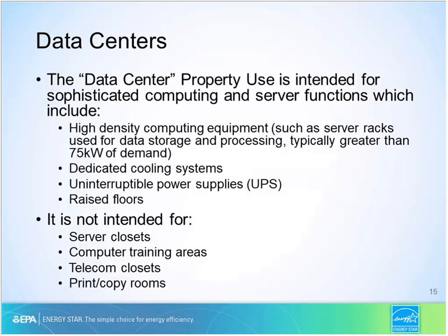We see a lot of data centers benchmarked within offices, so we want to cover this specific property type. For true data centers, make sure the space complies with the EPA definition. The space should be broken out as a data center if any of these conditions are met: the space has a constant demand load of more than 75 kilowatts, there is a dedicated cooling system, there is an uninterruptible power supply (UPS), or there are raised floors. The data center definition should not be applied to small server closets, computer training areas, telecom closets, or print and copy rooms — those should be included as part of the primary property type, typically the office.